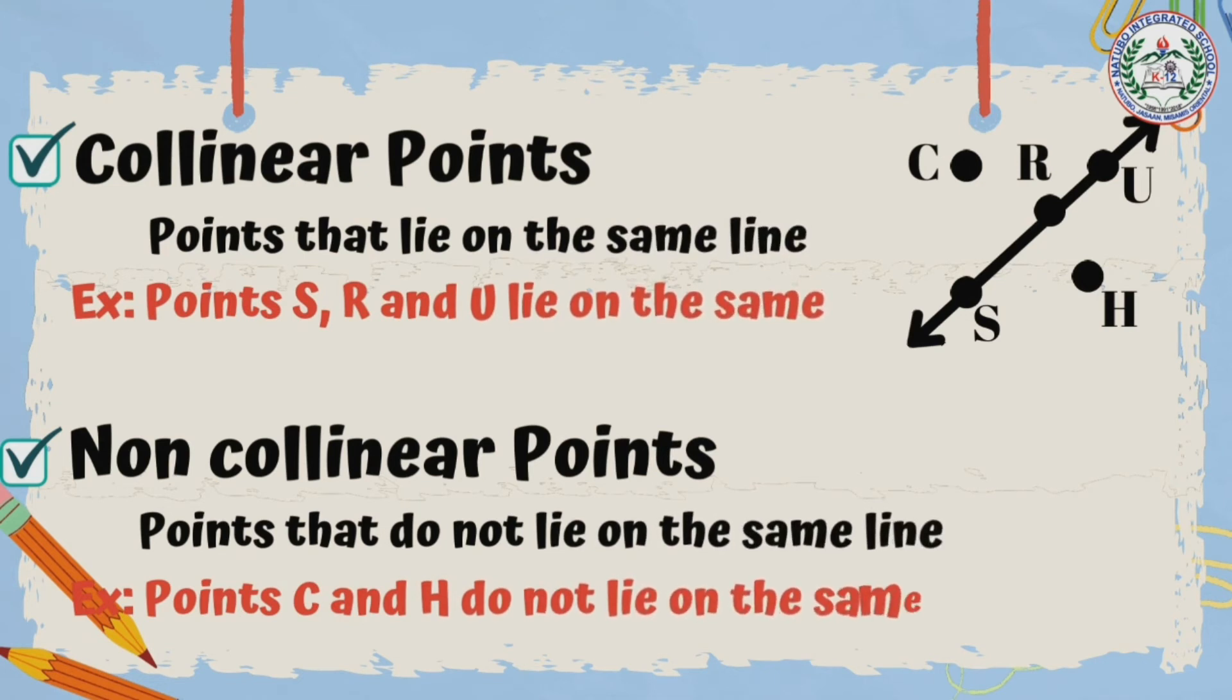Also, we have what we call as collinear points and non-collinear points. So collinear points are points that lie on the same line. As you can see in our line at the right, points R, S, and U lie on the same line. So therefore, they are collinear points. On the opposite, the non-collinear points are points that do not lie on the same line. So points C and H do not lie on the same line, so they are non-collinear points.